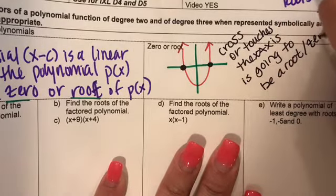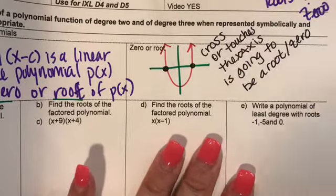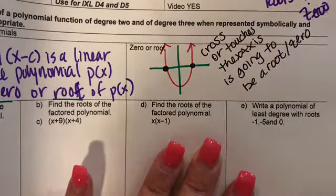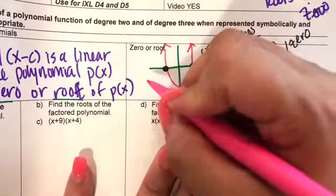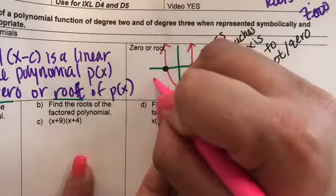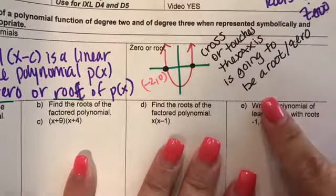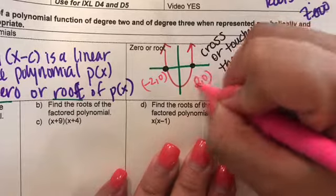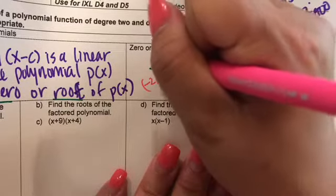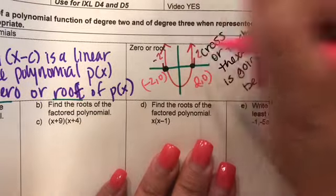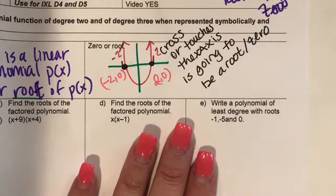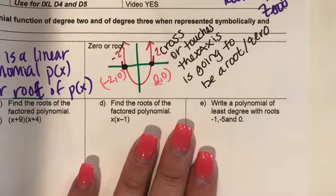Where it crosses or touches the X-axis is going to be a root or a zero. So let's identify these points. The point on the left is going to be negative two comma zero, and the point on the right is going to be two comma zero.